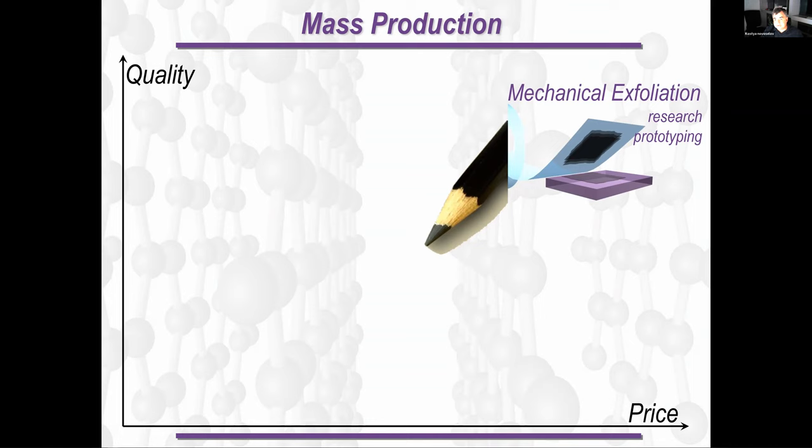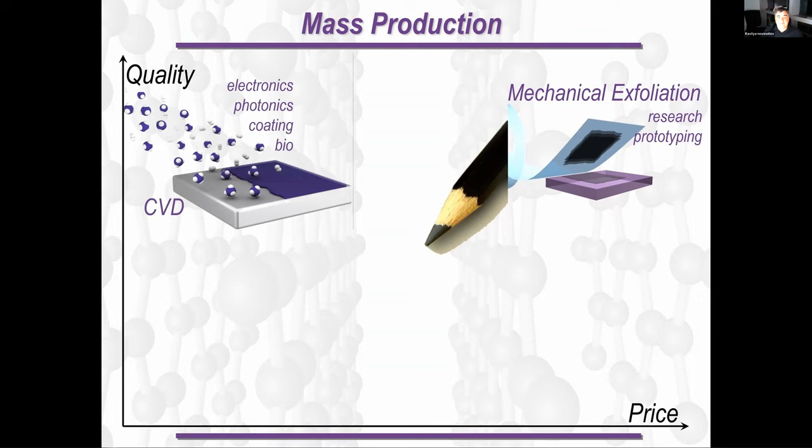For some time, there was an issue if we can produce enough graphene, because originally we started with the Scotch tape method. You simply exfoliate mechanically graphite, which you find in your lead pencils. And you just split it until you get exactly monolayer.